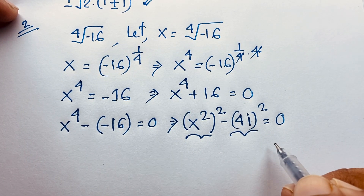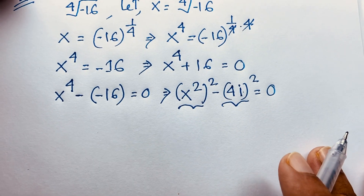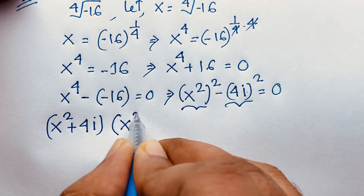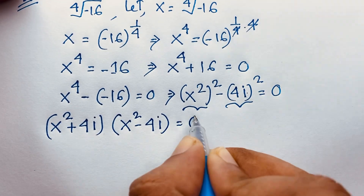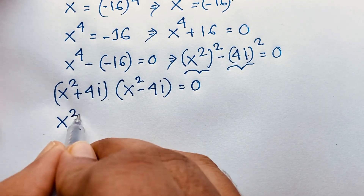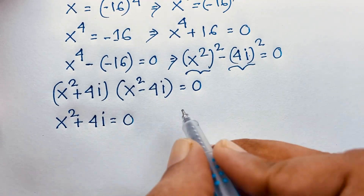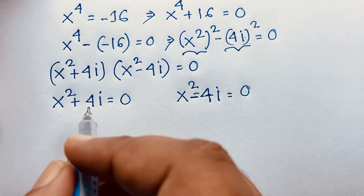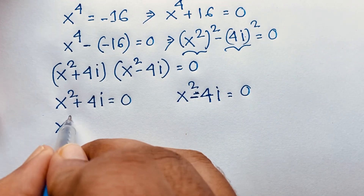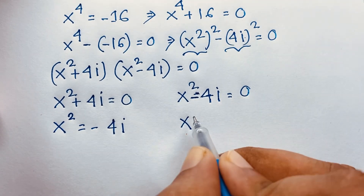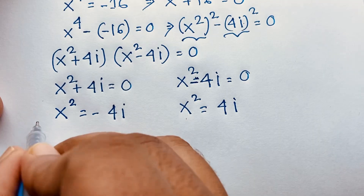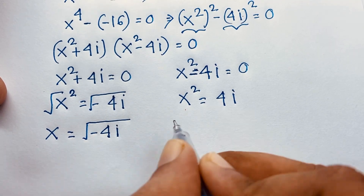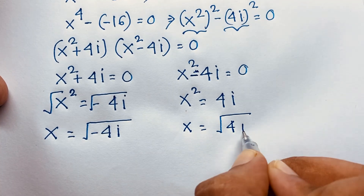So it will be x squared plus 4i times x squared minus 4i equals 0. This gives two cases: first case, x squared plus 4i equals 0, so x squared equals negative 4i. Second case, x squared minus 4i equals 0, so x squared equals positive 4i. Using square roots on both sides, we get x equals square root of negative 4i, and x equals square root of positive 4i. Both are complex numbers.